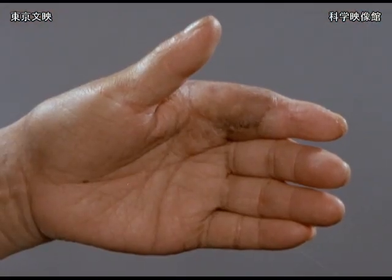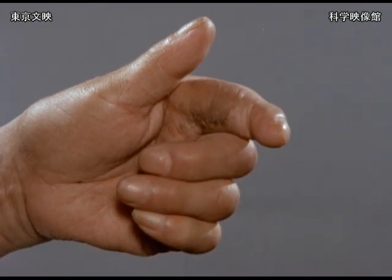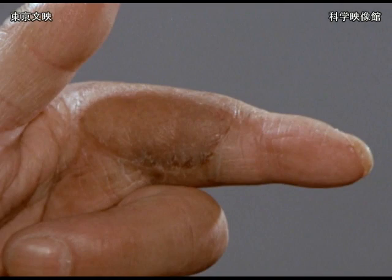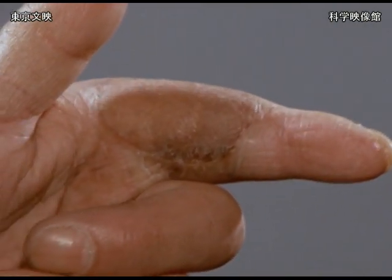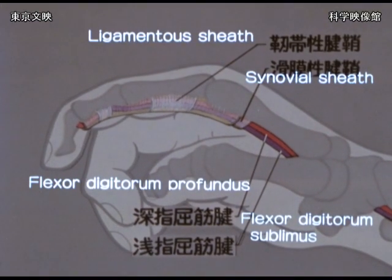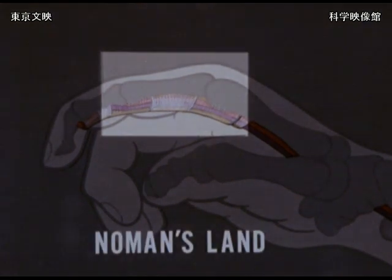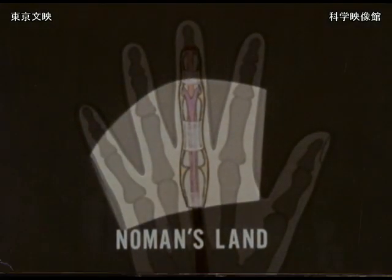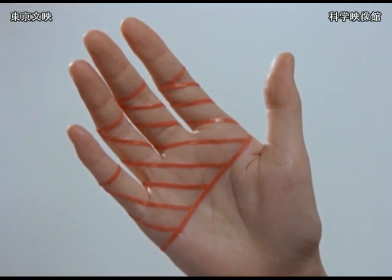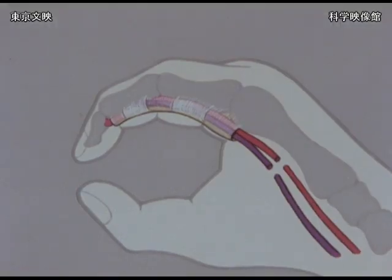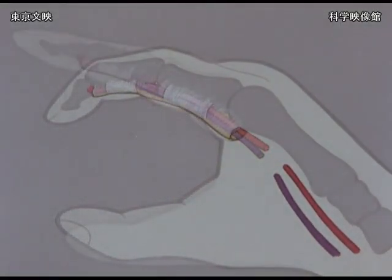A finger cannot be flexed when there is adhesion of the flexor tendon to the surrounding tissue. The most familiar one is the adhesion in the so-called No Man's Land, as seen in this patient. The area from the MP joint to the PIP joint, where the superficialis and profundus tendons run through a ligamentous tendon sheath, has been called No Man's Land, where primary tendon suture should be avoided because of potential adhesion. Even when an injury appears to have occurred outside No Man's Land, the tendons are sometimes divided in the tendon sheath depending on the position of the finger at the time of injury.